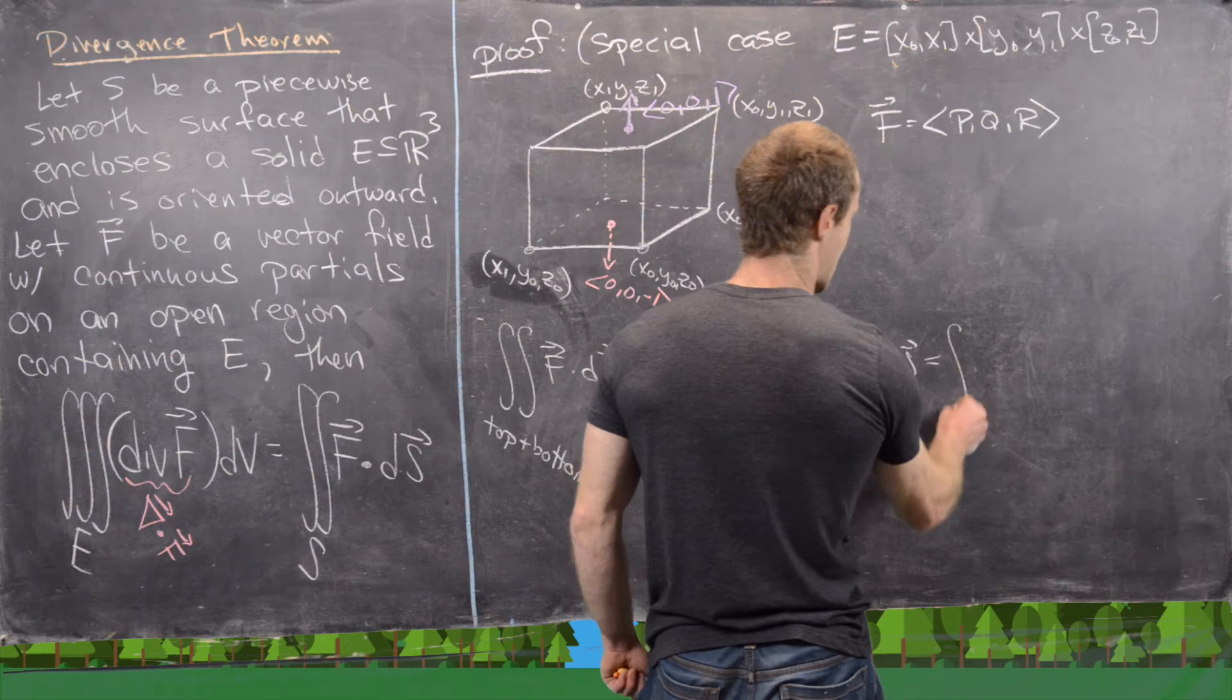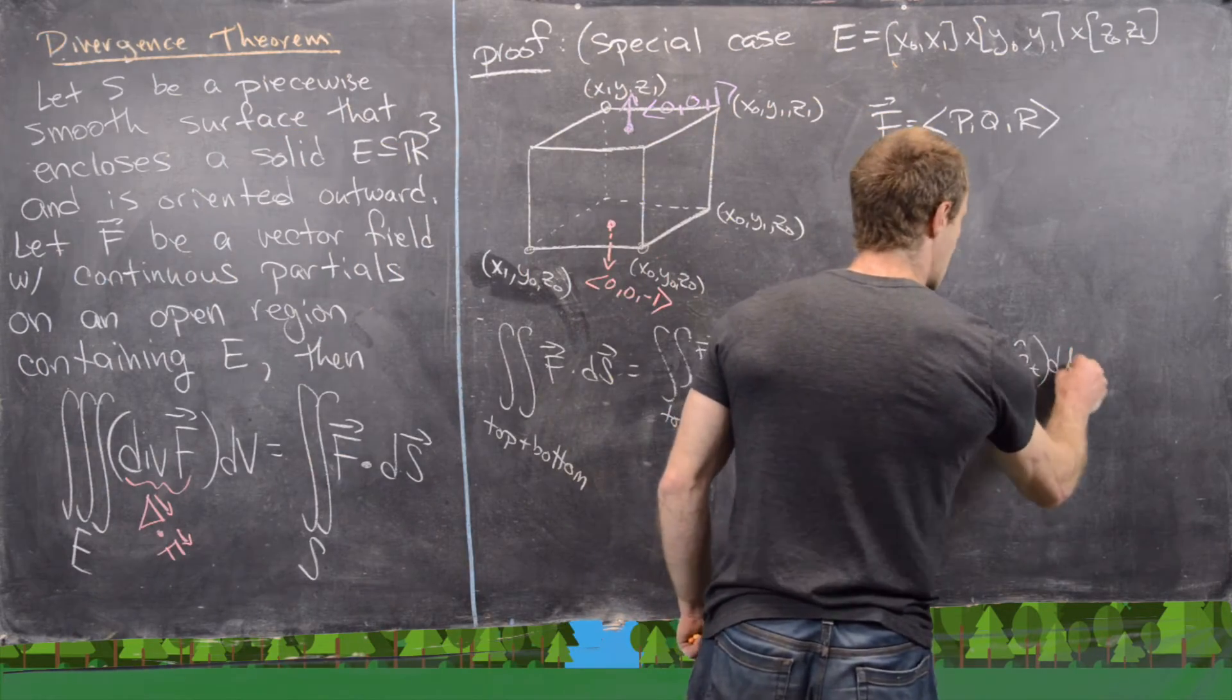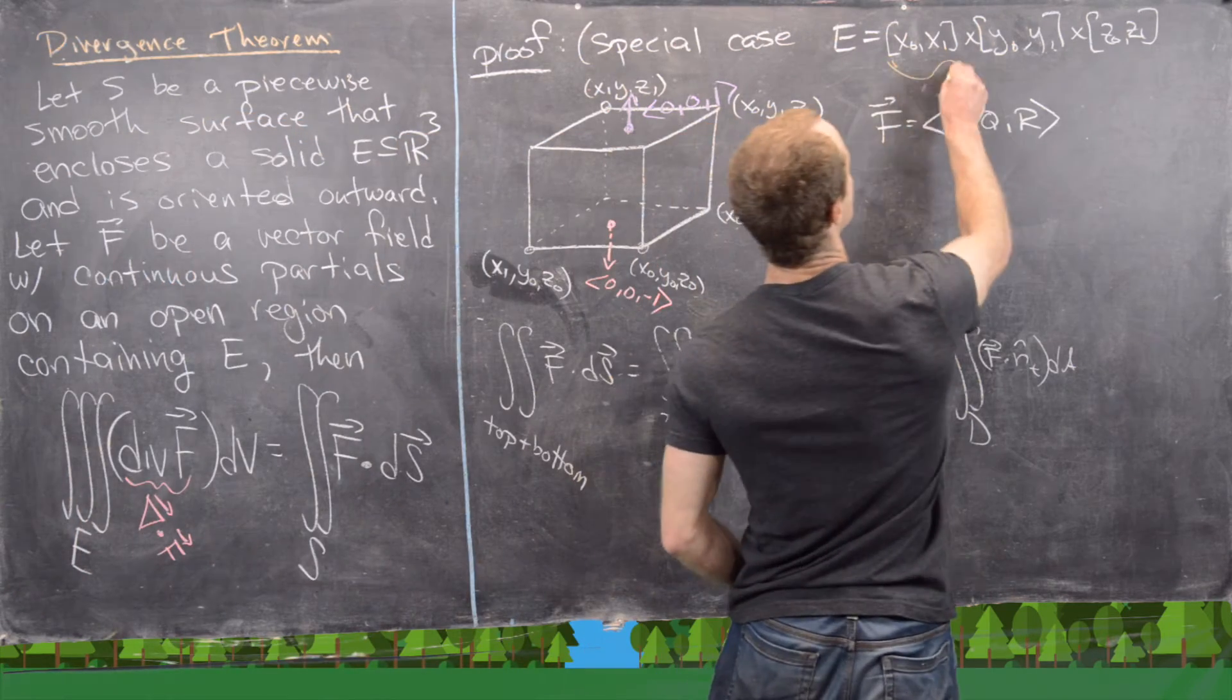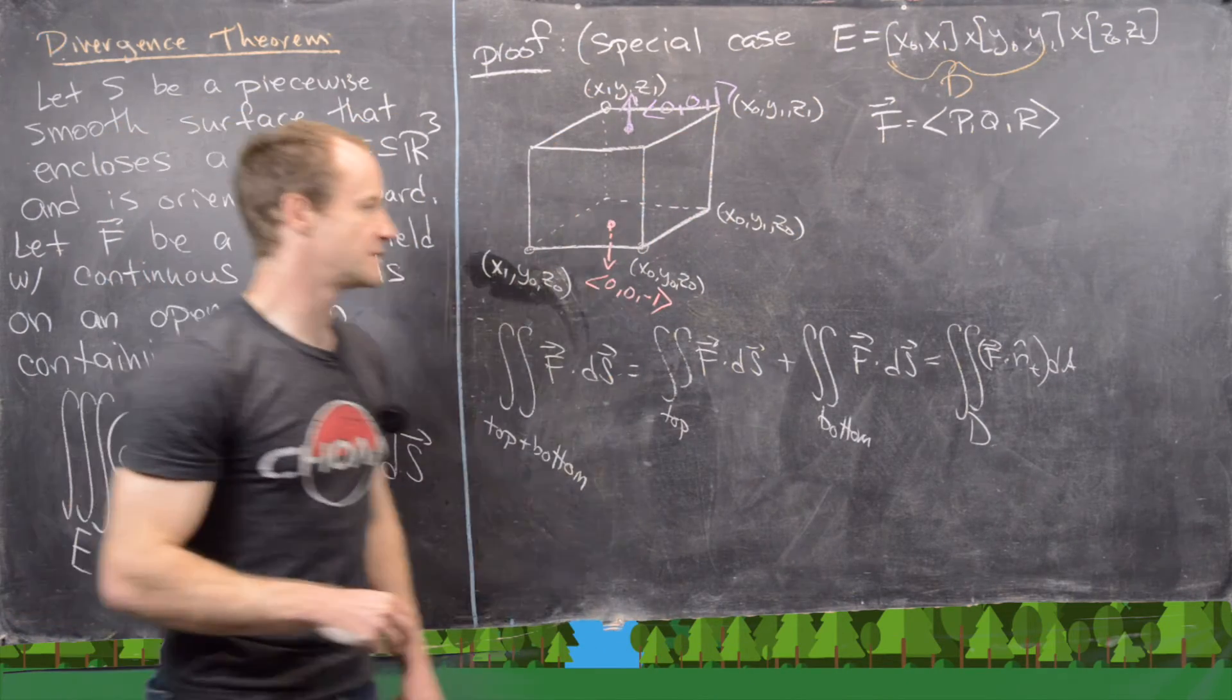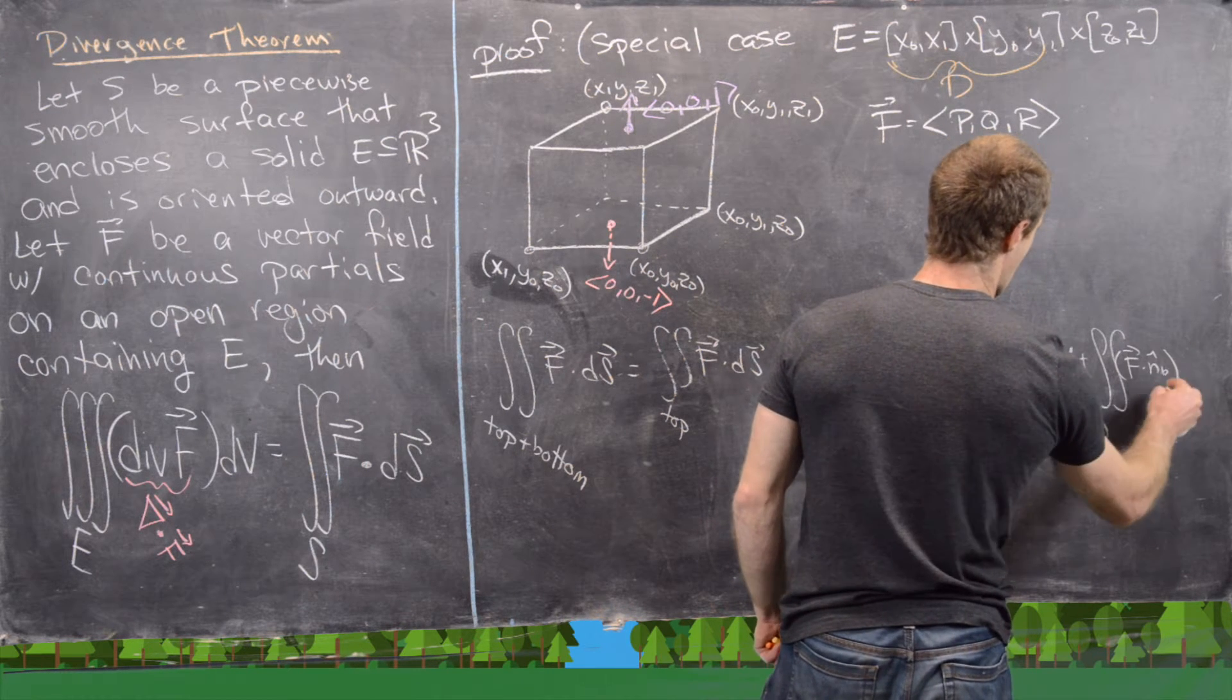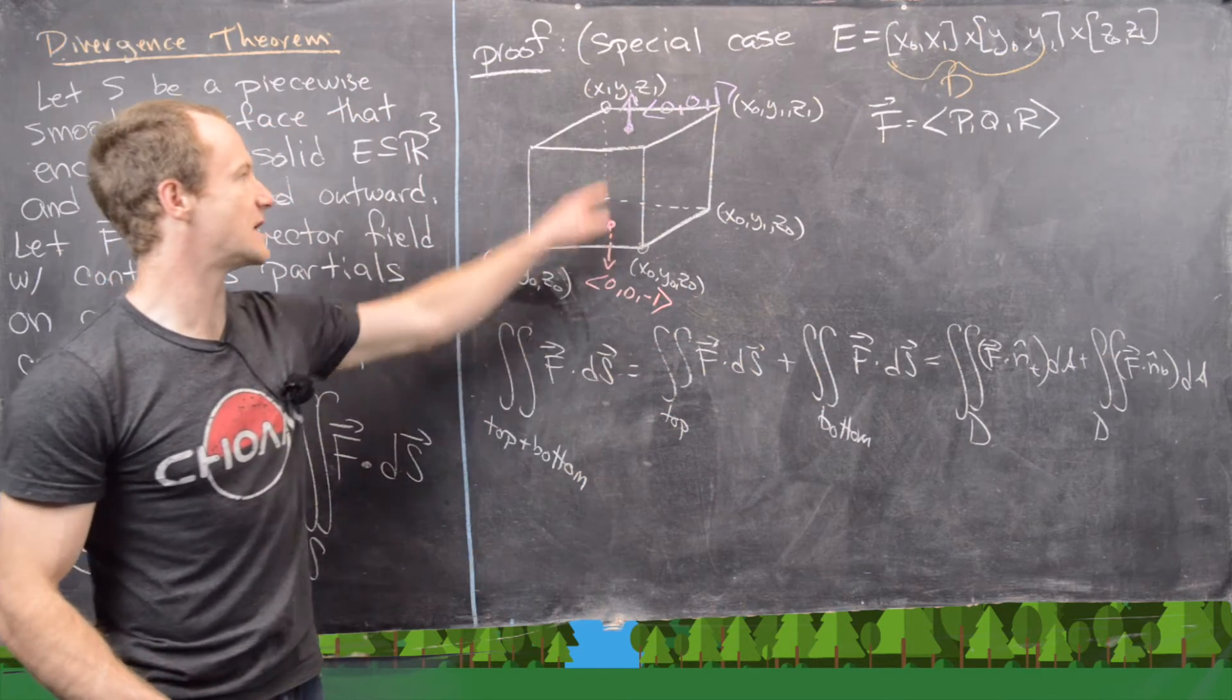To rewrite both of these, this one will be F dot n_t, where that's the normal vector for the top, dA, and where we're integrating over a region in the plane D which parametrizes this top portion. But notice that's quite easy to see. That's just going to be the region in the plane defined by these two intervals, so we can just call that D. And then we're going to add that to the double integral over D of F dot n_b for bottom dA. Fantastic. Now we can use that F is (p, q, r) and n_t and n_b, we know those from here and here.